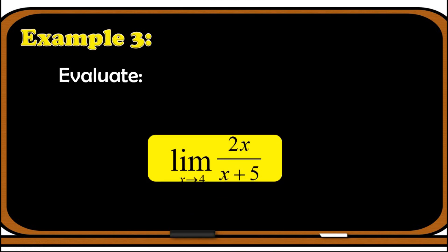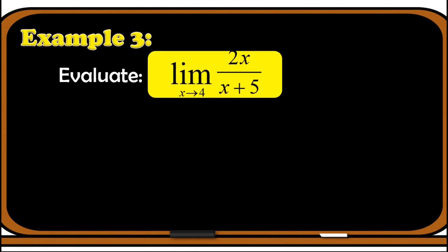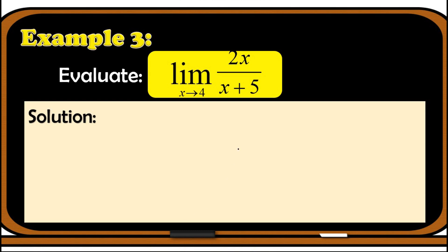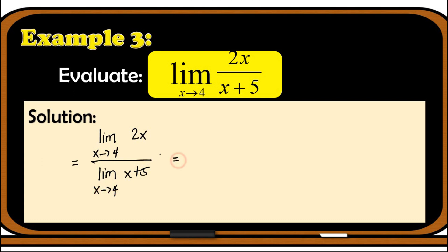Example number 3: evaluate the limit of the rational function 2x over x plus 5 as x approaches 4. The first thing we can apply, since we have a quotient of two functions, is the limit of a division. So we now have the limit of 2x as x approaches 4 over the limit of x plus 5 as x approaches 4. Next, we apply the constant multiple for the numerator, giving 2 times the limit of x as x approaches 4.